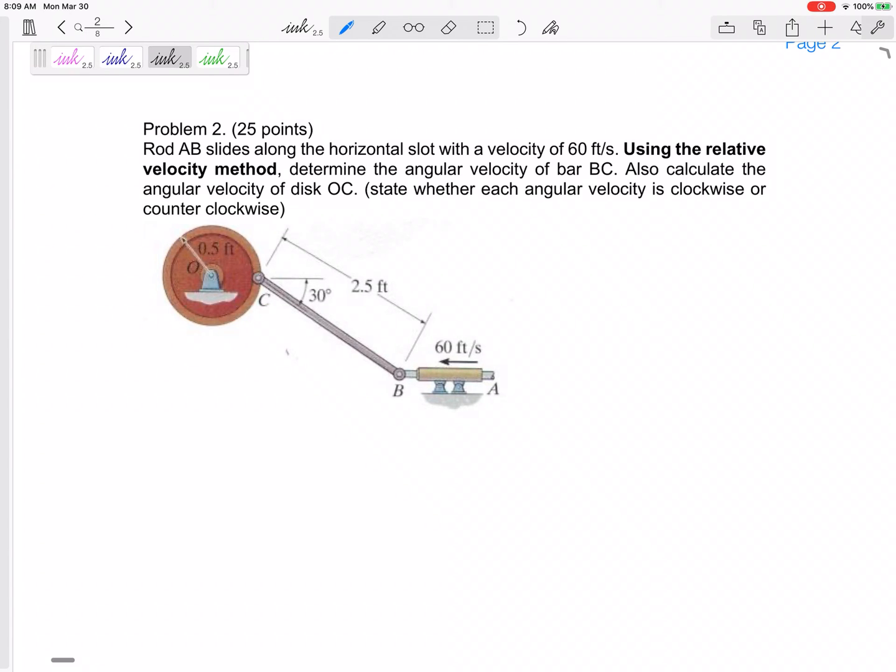Don't really memorize the process, but know the process. All right, so this one, a rod AB is sliding horizontally, like there, almost like a horizontal slot with a velocity of 60 feet per second. Using a relative velocity method, determine the angular velocity of bar BC. Also calculate the angular velocity of disk OC, state whether each of those are clockwise or counterclockwise.